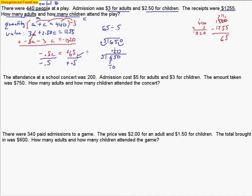This should be a 3 here because this is a 5 right down here — I made another mistake. Hopefully you don't make as many mistakes as I'm making. I knew it should have been doubled; I just didn't bring down the right number. So 5 goes into 15 three times. So there's my number. C, the number of children, equals 130.